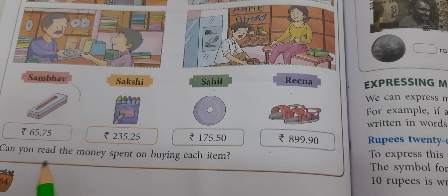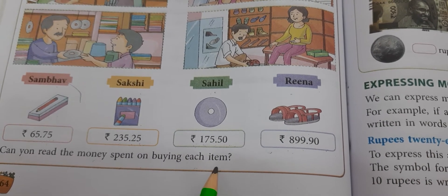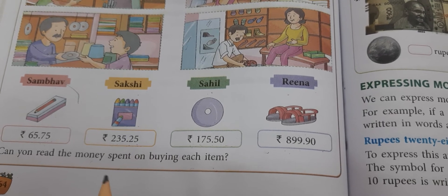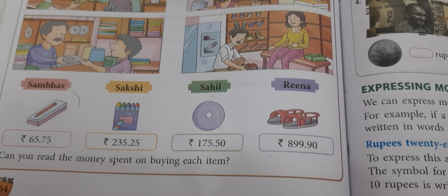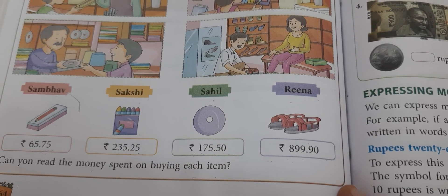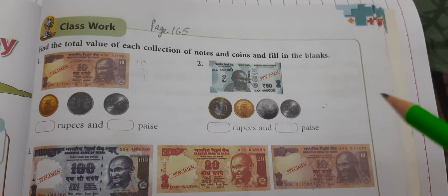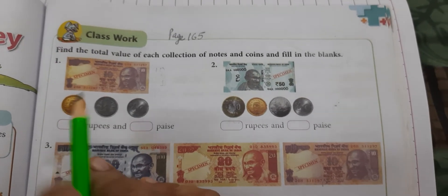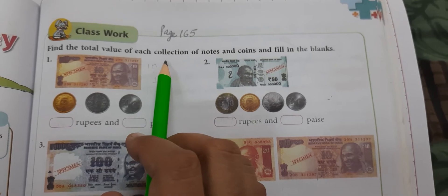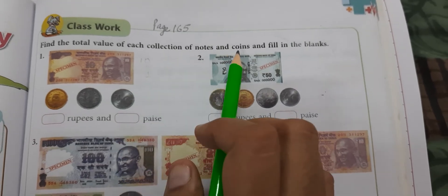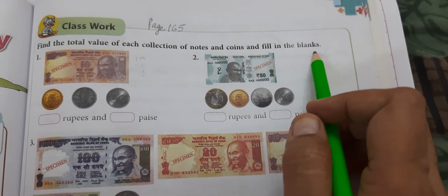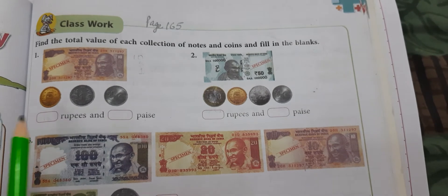Can you read the money spent on buying each item? We have already read them. Now this exercise says that we have to find the total value of each collection of notes and coins and fill in the blanks.